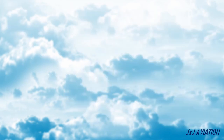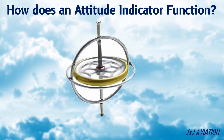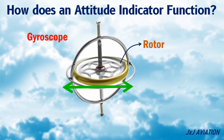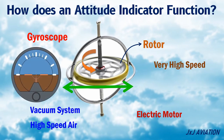How does an attitude indicator function? A traditional attitude indicator has a gyroscope which is mounted horizontally inside the instrument. This gyroscope has a small heavy wheel called a rotor which rotates at a very high speed. This rotation may be driven by a vacuum system with high-speed air directed on the wheel, or by using an electric motor. To understand how this gyroscope is useful in an attitude indicator, we need to look at the principles of a gyroscope.